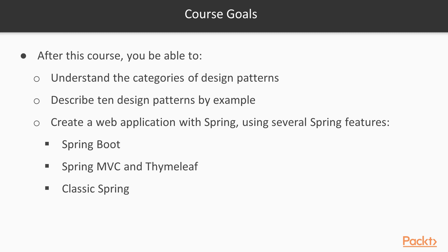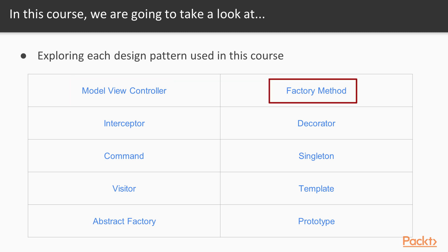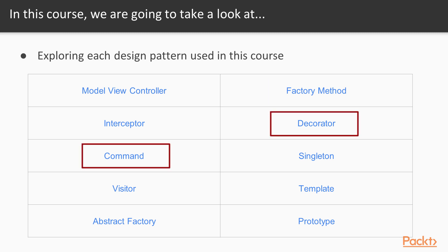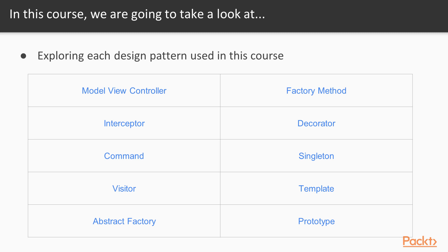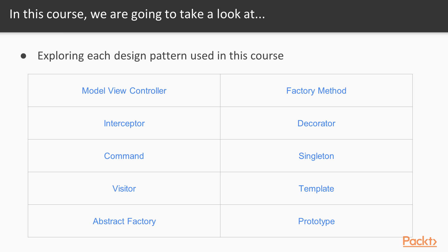Either way, you'll get some benefit by seeing how we can use design patterns with Spring. The design patterns we're going to explore through example are: Model View Controller, Factory Method, Interceptor, Decorator, Command, Singleton, Visitor, Template, Abstract Factory, and Prototype. We will wrap up with Template and Prototype as we generate some JSON. Singleton, Visitor, and Abstract Factory come right about the middle. Nonetheless, for each one of these there is a hands-on example inside this video course.